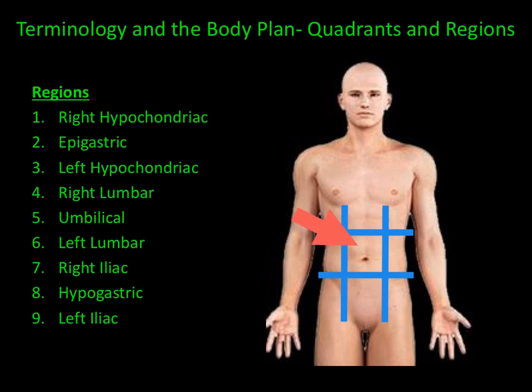Next is the umbilical region, or belly button area. Then the left lumbar region. The next region is the right iliac region, iliac referring to the hip bone.